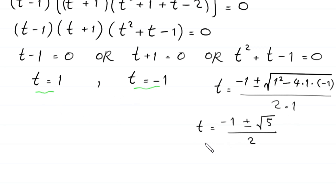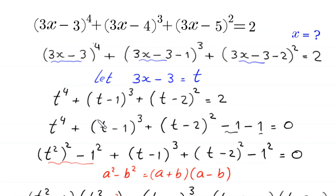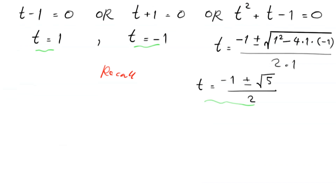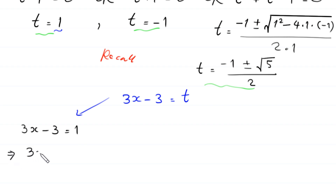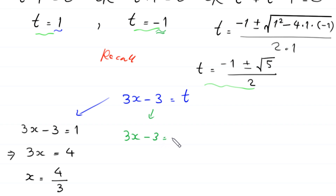We now have 3 values of t. To find x, we recall that 3(x-3) = t, i.e., 3x - 9 = t. When t = 1: 3x - 3 = 1, so 3x = 4, giving x = 4/3. When t = -1: 3x - 3 = -1, so 3x = 2, giving x = 2/3.